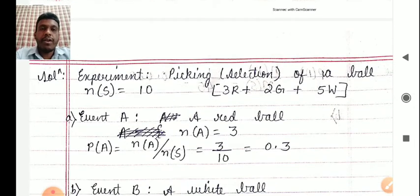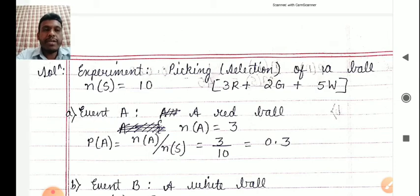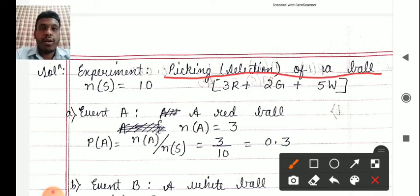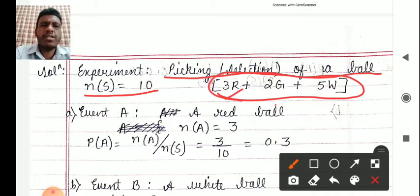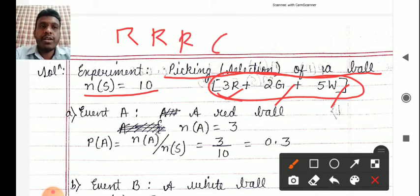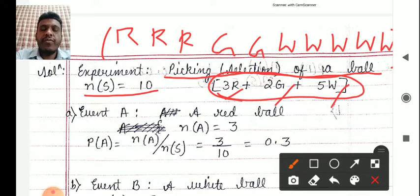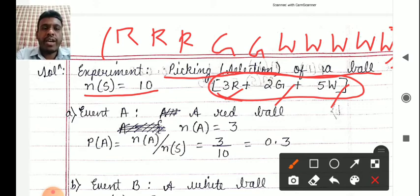The experiment we are conducting is the picking or selection of one ball. So n(S) = 10. The sample space is: R, R, R, G, G, W, W, W, W, W — five white balls, two green balls, and three red balls. So total items in the sample space are 10, meaning n(S) = 10. Out of these 10 balls you are going to select any one ball.